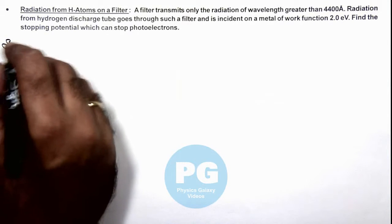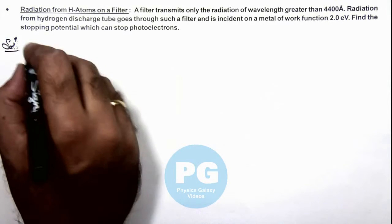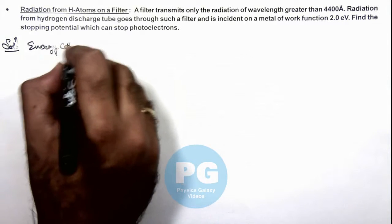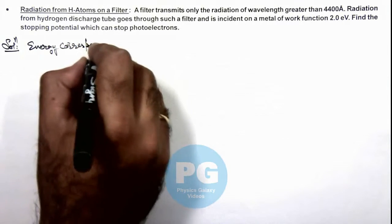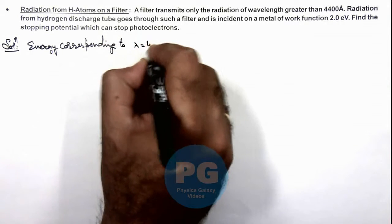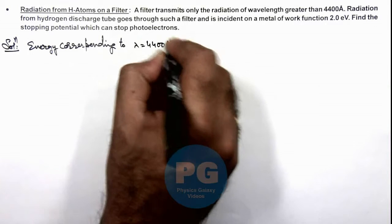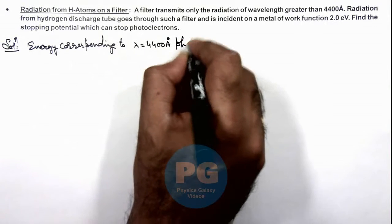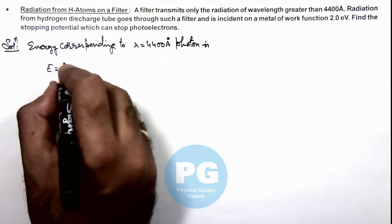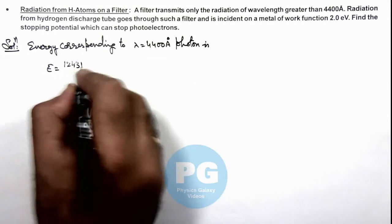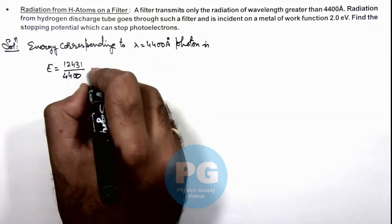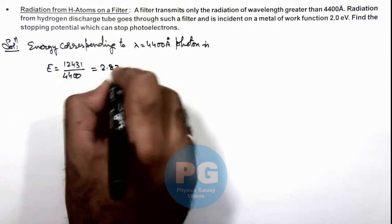Here, we can first calculate the energy corresponding to λ = 4400 angstrom photon. The energy of these photons we can write as 1243 divided by 4400, that is 2.82 electron volts.